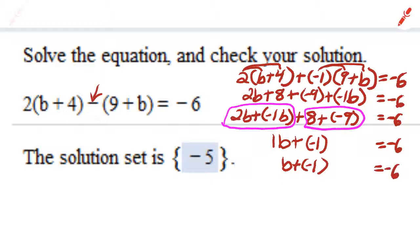I need to get b by itself, but my b is not by itself. It has a negative 1 added on to it. The way to get b by itself is to add the opposite of negative 1 to both sides of the equation. Why? Because negative 1 plus 1 equals 0.